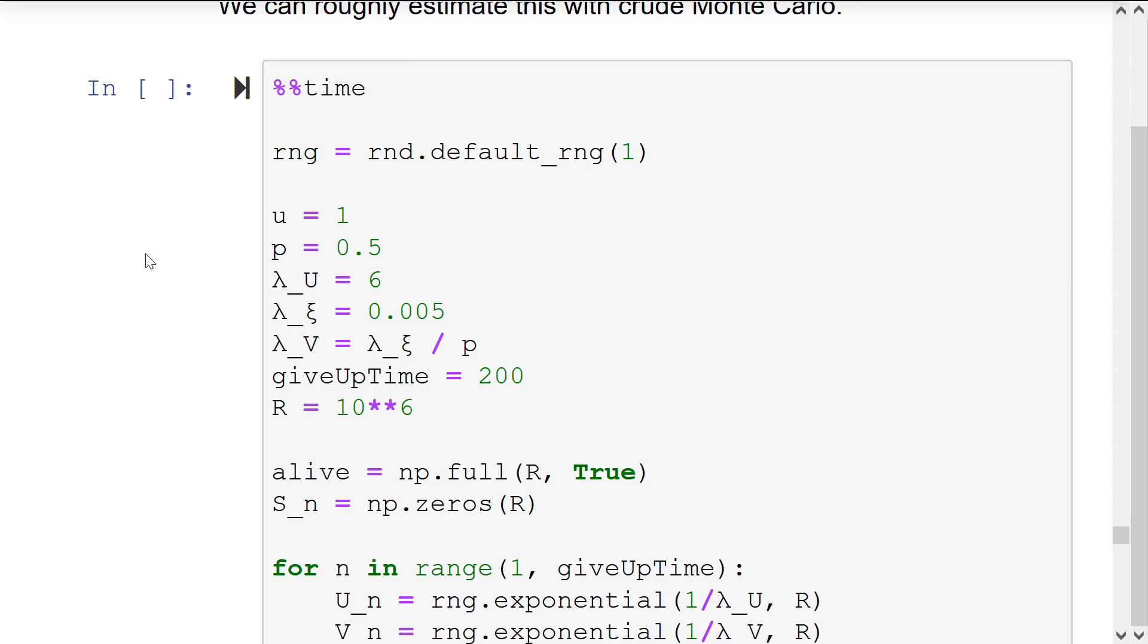Here I create a random number generator, pull in the constants that we'll use for this problem, specify a give up time, which is the number of claims to simulate.